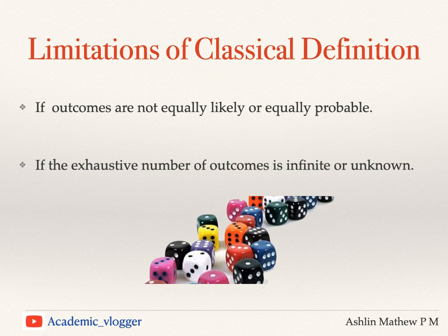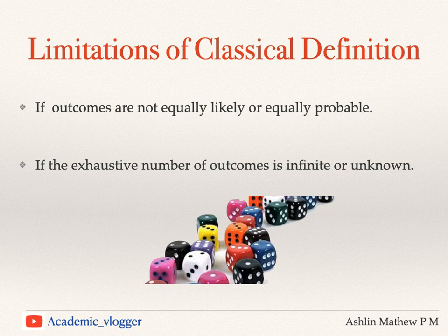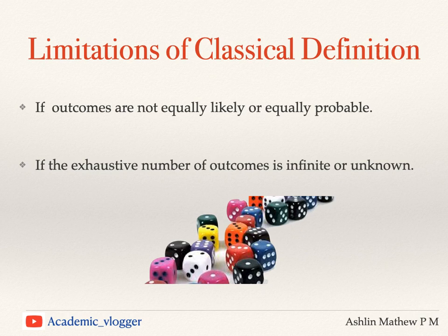There are some limitations to the classical definition of probability. For it to hold, outcomes must satisfy conditions like mutually exclusive, exhaustive, and equally likely. If those conditions are not met, we cannot compute probability using the classical definition. If outcomes are not equally likely, the probability value may be wrong. Also, if the total number of outcomes is either unknown or infinite, we cannot apply the classical definition. These are the two main limitations.